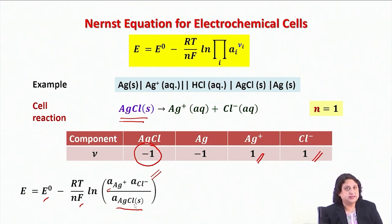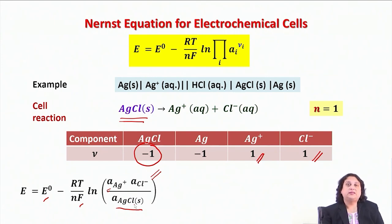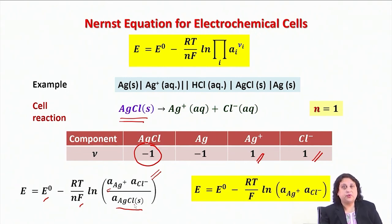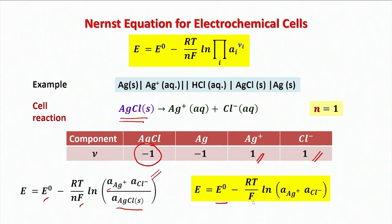But this is not the final expression. We adopt the convention that a solid has activity equal to 1. Therefore, the final form of the Nernst equation for this electrochemical cell is E = E° − (RT/F) ln [a(Ag⁺) · a(Cl⁻)].